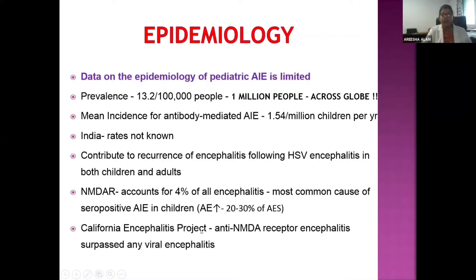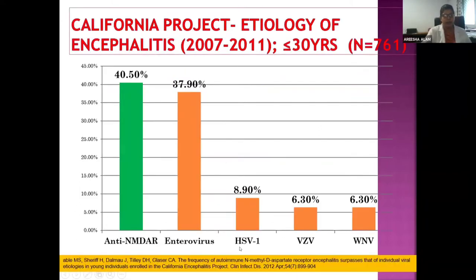The California Encephalitis Project — a population-based study — found that anti-NMDA receptor encephalitis surpassed any individual viral encephalitis, seen in about 40.5% of the population, whereas other infectious etiologies were even less in comparison.